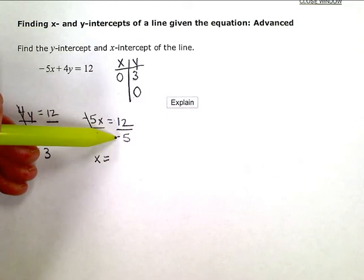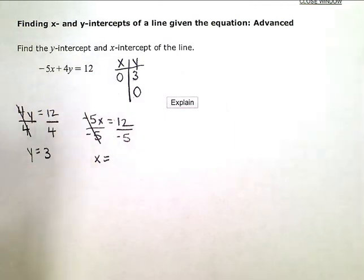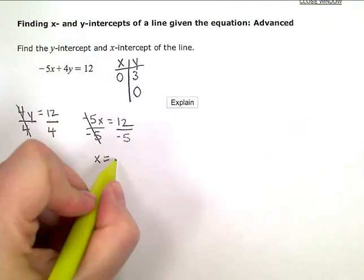So, they have no factors in common. So, this isn't going to reduce or simplify at all. So, I could leave it like this. Negative 12 over 5.